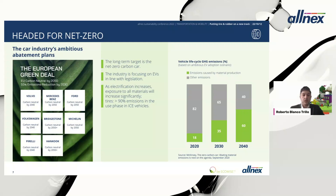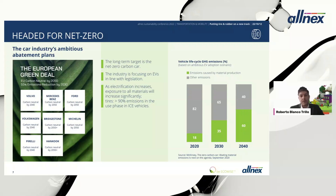Car producers also want to become carbon neutral by 2040 or 2050. The consequence is pretty clear: if the car itself no longer runs on fuel and carbon neutrality is the clear goal, it has a direct impact on the emissions caused by material production. The relevance of becoming more efficient in material production, material design, and choice of materials becomes more important in the future than ever before.